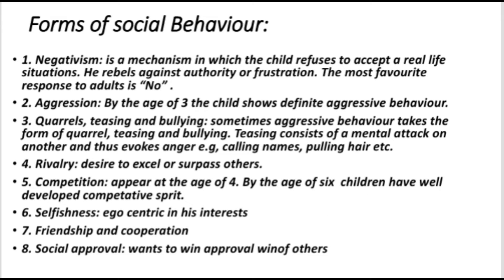Some important forms of social behavior common during this age: first, negativism — the child refuses to accept real-life situations and rebels against authority or frustration. His most favorite response to adult authority is 'no' or uncooperative gestures. Second, aggression: by age 3, the child shows definite aggressive behavior; however, with increase in age, there is a decrease in the expression of aggressiveness.